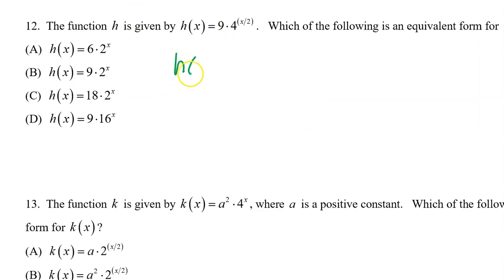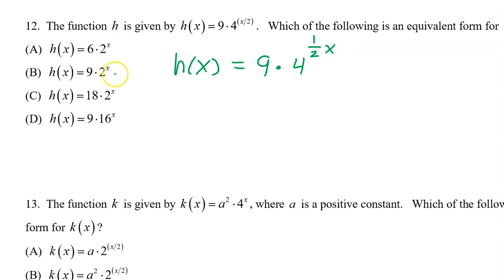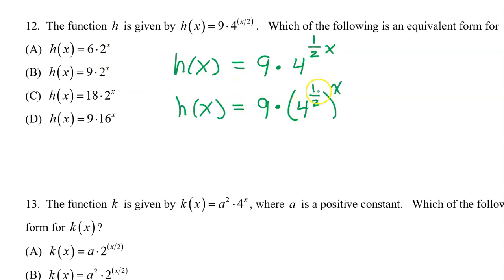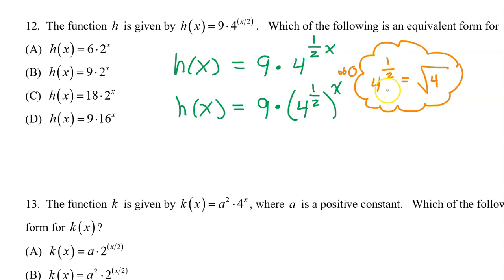Number 12: h of x equals 9 times 4 to the x over 2 power, and x over 2 is the same thing as 1 half x. None of the answer choices have 1 half x, so I need to get x out by itself. h of x equals 9 times 4 to the 1 half power all raised to the x power. 4 to the 1 half power is the square root of 4, so h of x equals 9 times 2 to the x power. The answer is b.